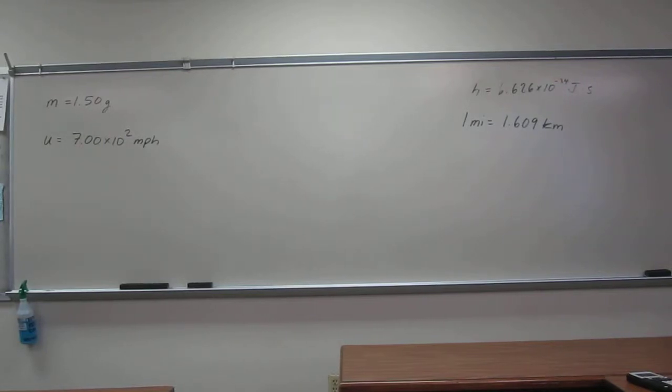So this is the problem where we're going to be using the de Broglie equation. It says a rifle bullet with a mass of 1.50 grams has a velocity of 7.00 times 10 squared miles per hour.